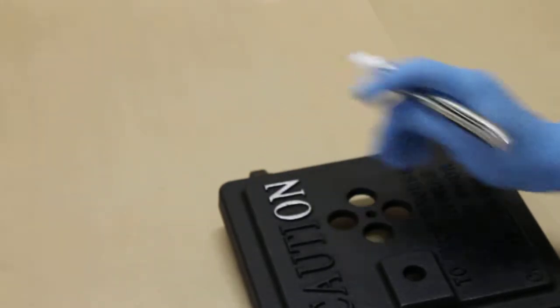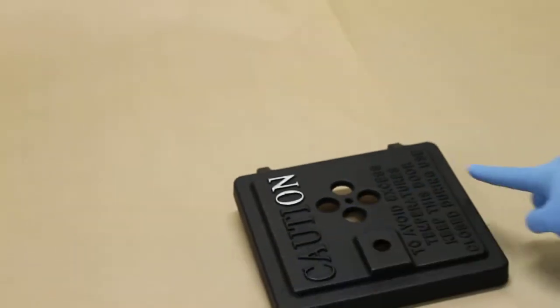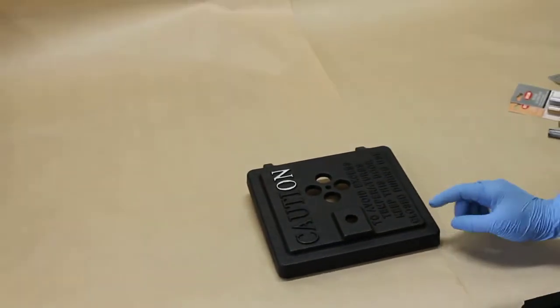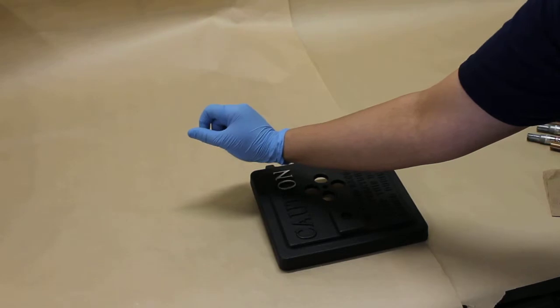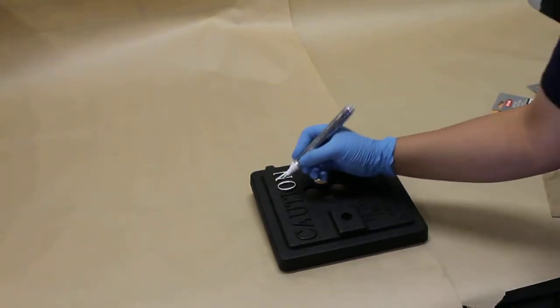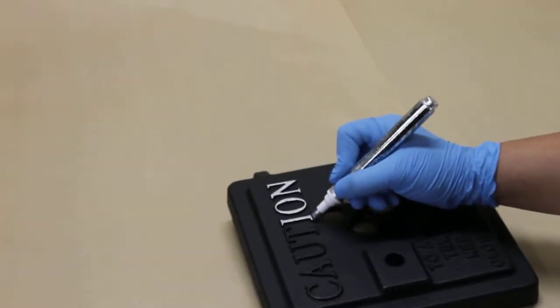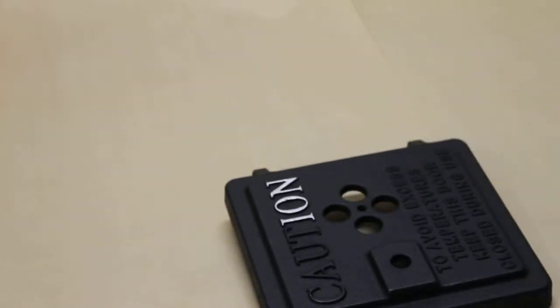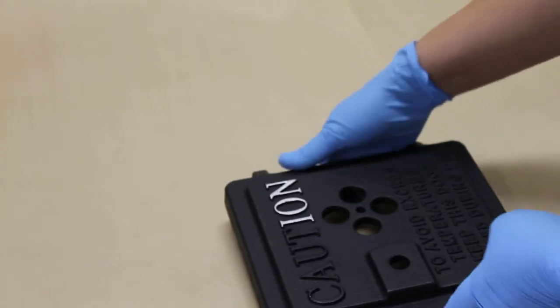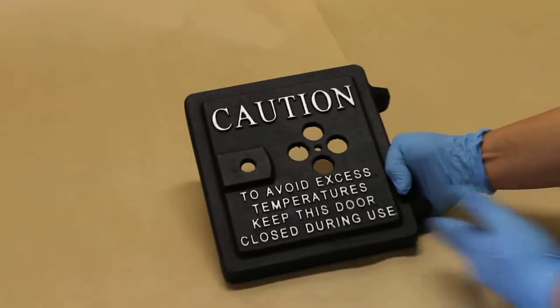And remember you always want to start from the back to the front and from the top to the bottom so you don't smear the paint when you're reaching over to paint something else. I'll show you a finished door to see what it looks like. So this is your painted door.